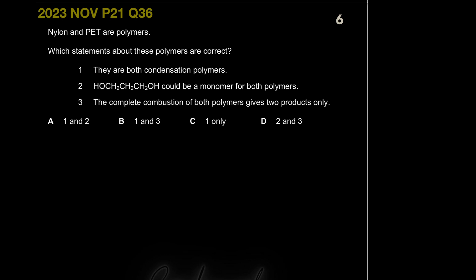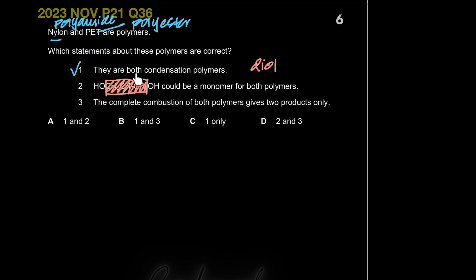Next MCQ: nylon and PET (polyethylene terephthalate) are polymers. They are both condensation polymers because a small molecule — water (H2O) — is eliminated when they form. They are both synthetic condensation polymers. Nylon is a polyamide and PET is a polyester. The question also shows a structural formula and asks if it could be the monomer for both polymers.